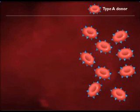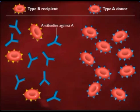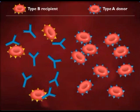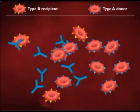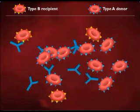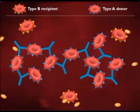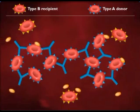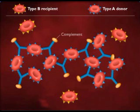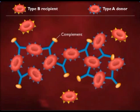If blood from a person who is type A is transfused into a person who is type B, antibodies present in the type B blood react with the surface antigens on the incoming red blood cells. This also leads to complement fixation and cell lysis.